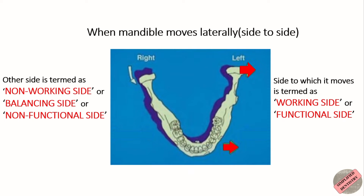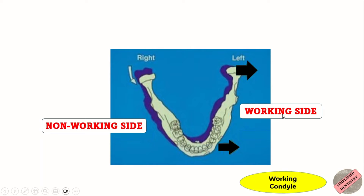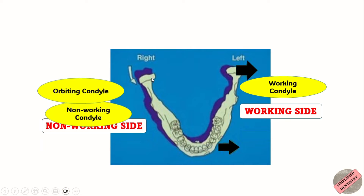The condyle on the side to which the mandible moves, i.e. towards the working side, is termed as the working condyle, and the condyle on the other side is termed as the orbiting condyle or non-working condyle.